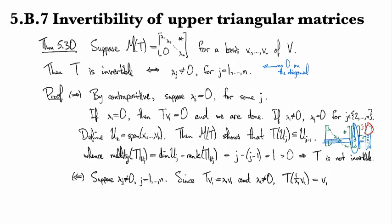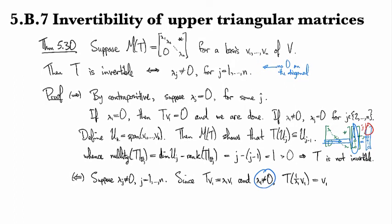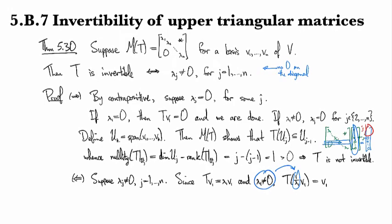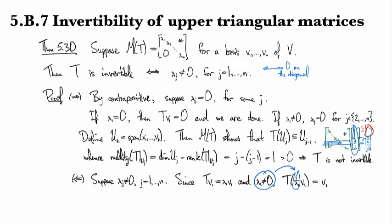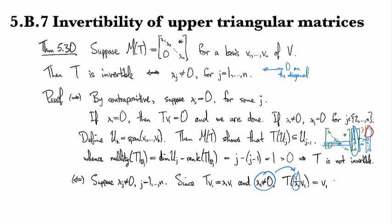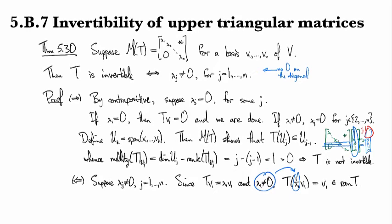The key point about being non-zero is it allows me to write that expression. That tells you that v_1 is in the range of T.